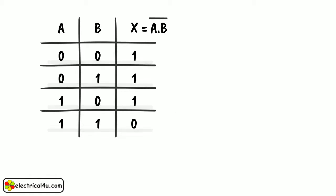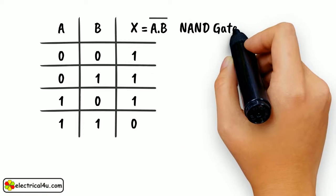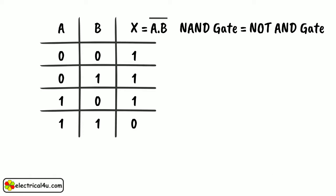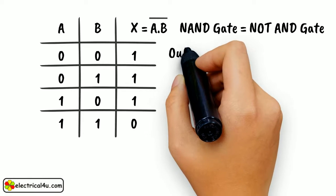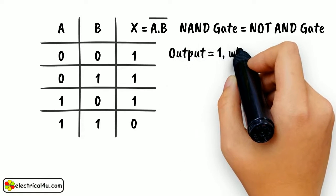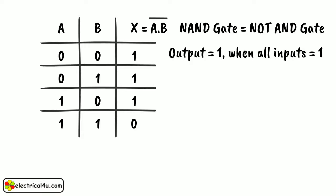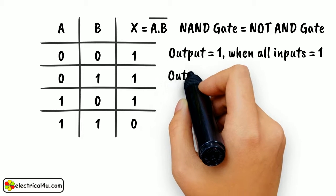It is just the reverse of the truth table of an AND gate. NAND gate actually means NOT AND gate, which means the output of this gate is just the reverse of that of a similar AND gate. We know that the output of the AND gate is only high or 1 when all the inputs are high or 1. In the case of NAND gate, the case is just opposite.